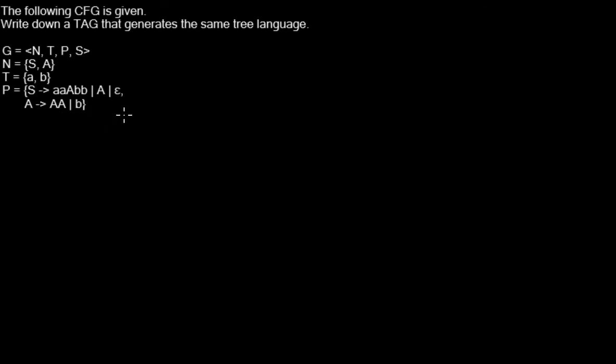You can convert a context-free grammar, for instance, into a Chomsky-Normal form or into a Greibach-Normal form and the grammars would be called equivalent because they are generating the same string language.